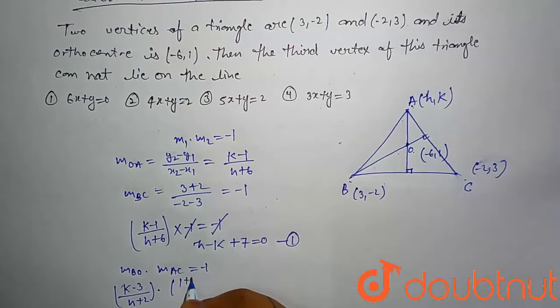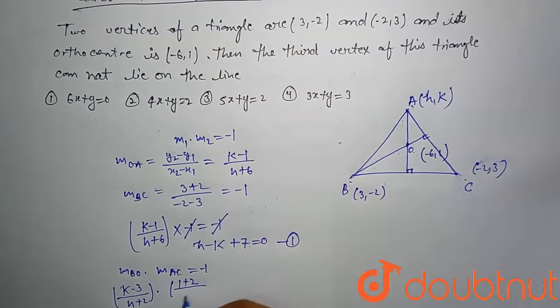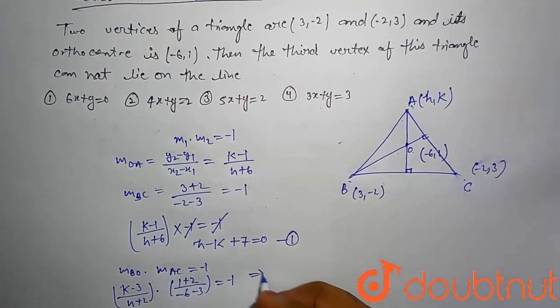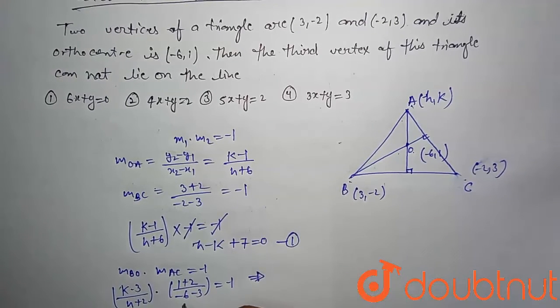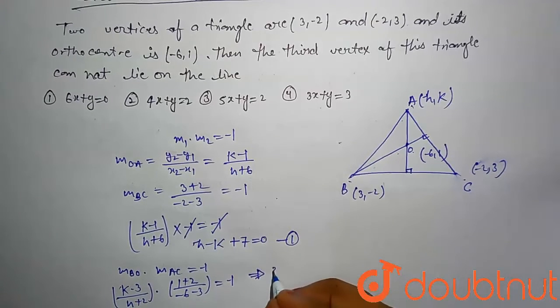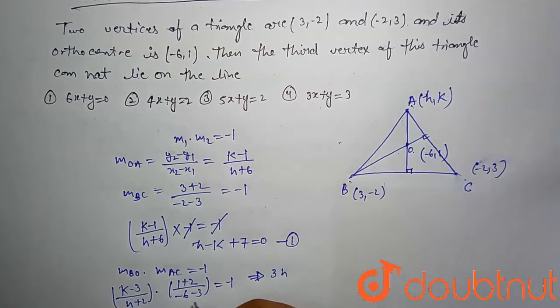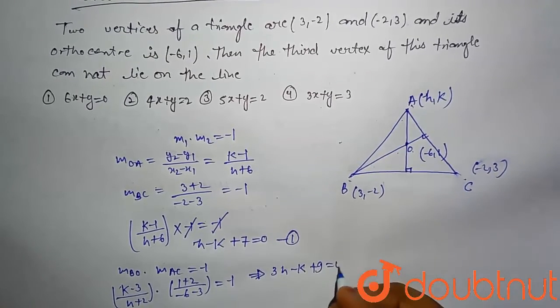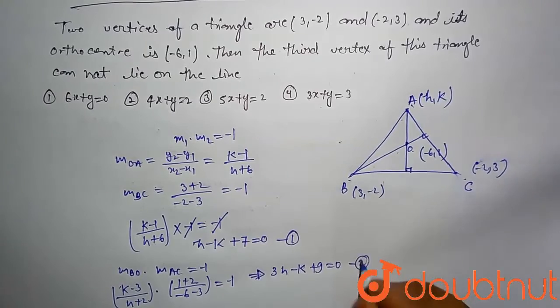(1 + 2) divided by (-6 - 3) equal to -1. If you compute this, then this comes out 3h - k + 9 = 0. This is our second equation.